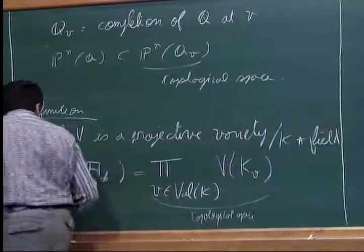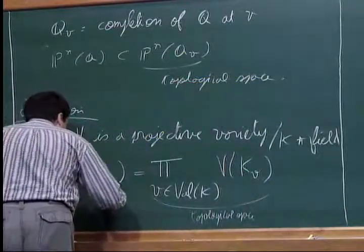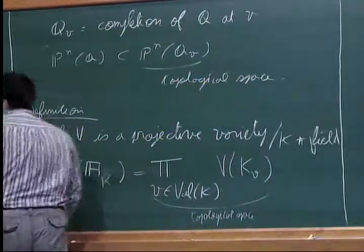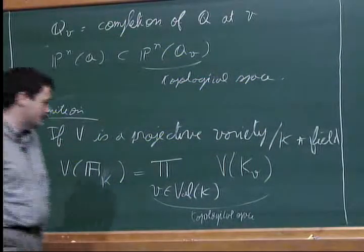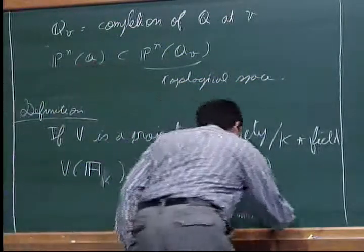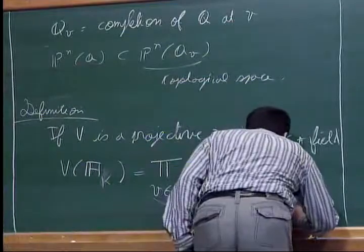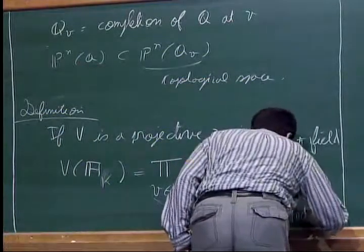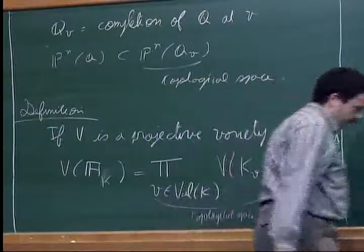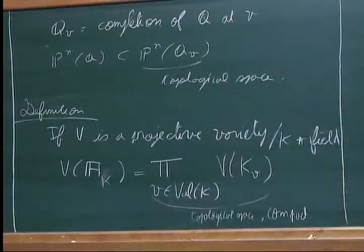This should be a capital K. So this is a topological space for the product topology, and it is compact as a product of compact spaces.